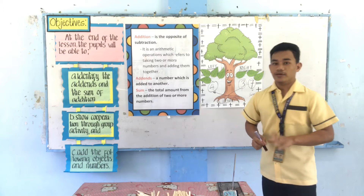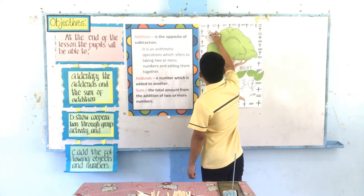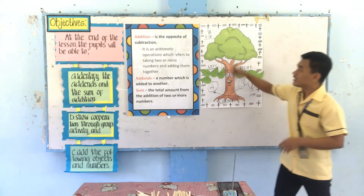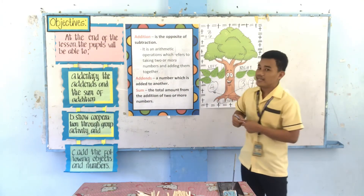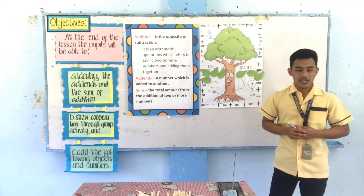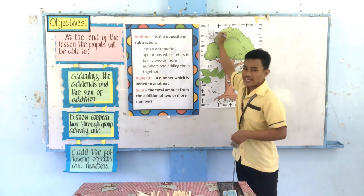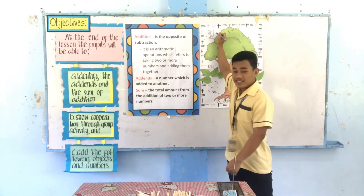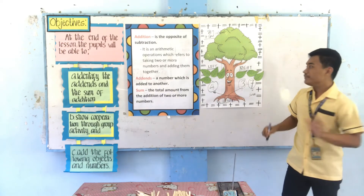Let's discuss another example. For example, eight plus six. Where are the addends in this equation? Yes, Vanessa? The add-ends in this situation are eight and six, because they are the two numbers added together. Eight and six are the addends. Now, what is the sum of the equation eight plus six? Let's count — eight plus six equals fourteen. Very good, Vanessa — fourteen.